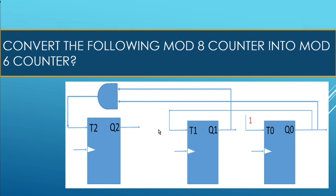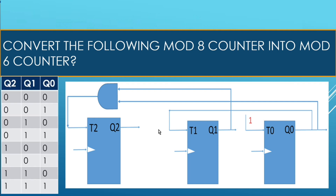I have drawn its truth table. It has three flip-flops: q2, q1, and q0. A mod 8 counter has eight stages, so it counts from 0 to 7. We want to convert it into a mod 6 counter, meaning it will have six stages and count from 0 to 5. We need to cut stages 6 and 7 — when the count reaches 5, it should come back to 0.